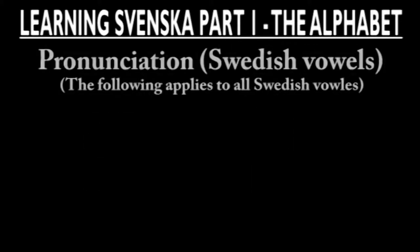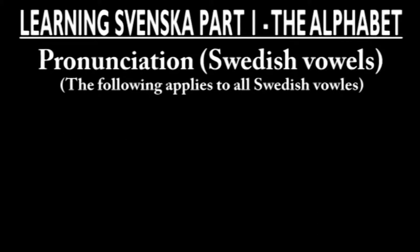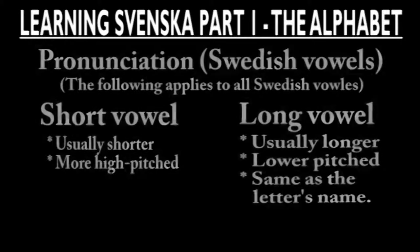On the other hand, all vowels have two different pronunciations which are fairly similar. These two pronunciations are called the short vowel and the long vowel. The short vowel is usually shorter and more high-pitched, while the long vowel is longer and has a lower pitch. In the beginning it will probably be very hard to separate the two, but after a while it will become more natural.